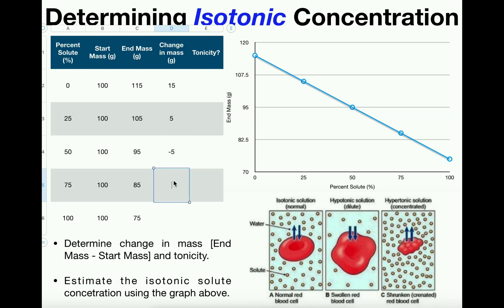For the 50 percent solution, 95 minus 100 is negative 5. You'll notice I've designed this so that the values decrease by 10 each time. So for 75 percent, 85 minus 100 is negative 25.